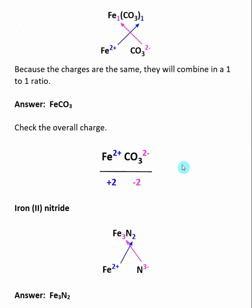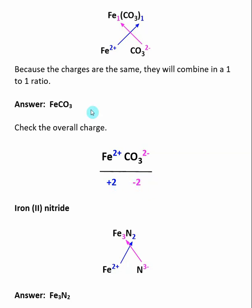We then want to check that our charges cancel to give a neutral formula. Inside our compound, we had one +2 iron and one -2 carbonate. The total positive charge is +2 and the total negative charge is -2, so these combine to create a neutral species. This confirms FeCO3 is our correct answer.